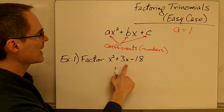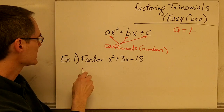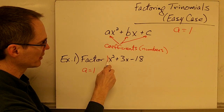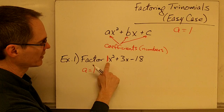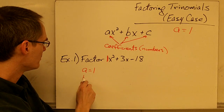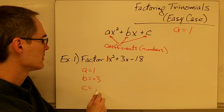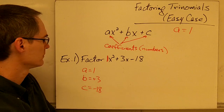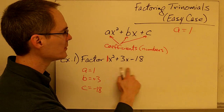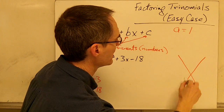For example, if I wanted to factor this trinomial: x squared plus 3x minus 18. I can see my a value is going to be 1, because there's always an implied 1 in front of a term if no number is written there. So a is 1, b is positive 3, and c is negative 18. The way I factor this easy case trinomial is using something we call the diamond method.